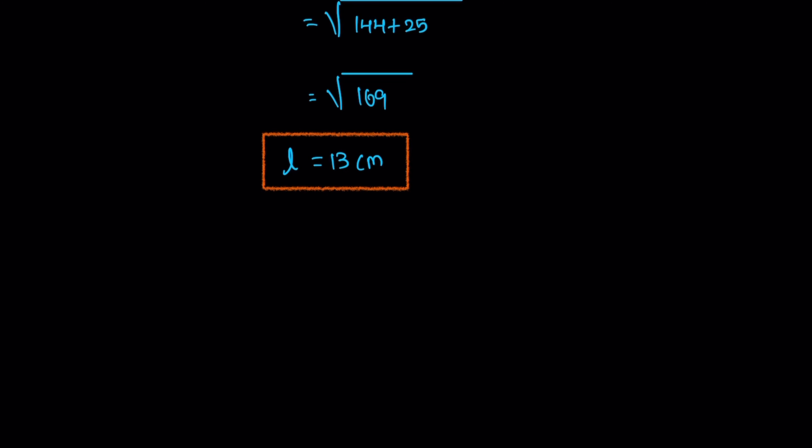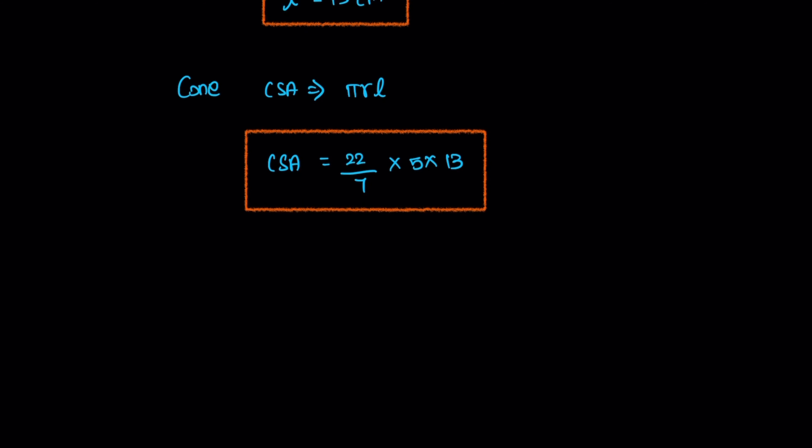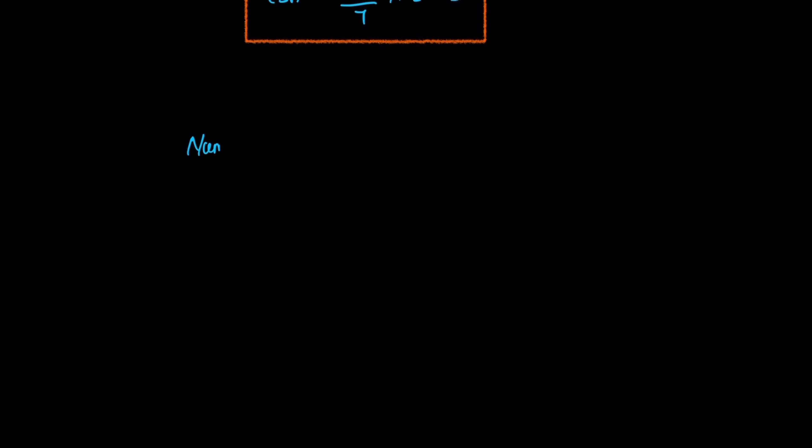Now with the L value, we can find CSA. Cone curved surface area equals π R L. Replacing the corresponding values: 22 divided by 7 times R value 5 times L value 13. This is one cone's area. Now, the total number of caps equals...